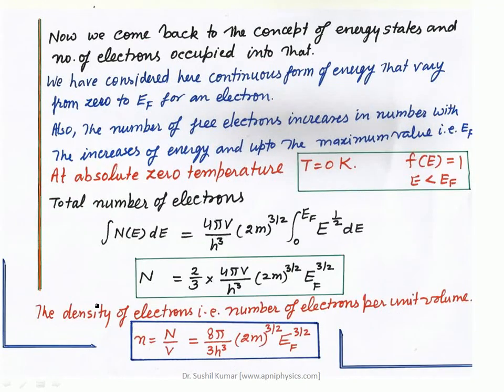Now we return to the concept of energy states and number of electrons occupied. How these electrons fill different energy states below the Fermi energy level: we have considered a continuous form of energy varying from 0 to EF for an electron. Also the number of free electrons increases with increasing energy up to the maximum value EF — this is an important concept. Energy is continuous, and the number of free electrons increases with respect to the energy of states.